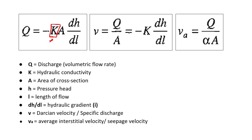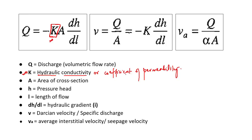K is called the hydraulic conductivity, or it is also called the coefficient of permeability. It is not the same as permeability — it is the coefficient of permeability. The formula becomes: Q equals minus K times A times the head difference divided by the length L.